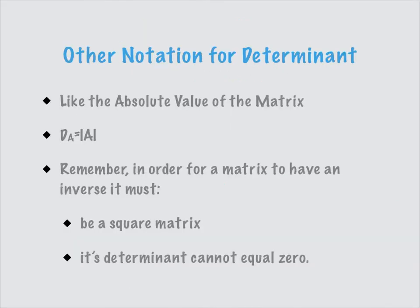Other notations for the determinant: it's kind of like the absolute value of a matrix, so determinant of A can be rewritten using absolute value bars around A. An important thing to remember about the determinant is its connection to the inverse — in order for a matrix to have an inverse, and to be able to solve a matrix equation or system of equations, we need a square matrix and the determinant cannot equal 0. We're going to see its important application in Cramer's rule.